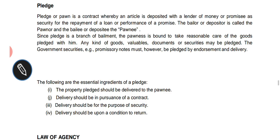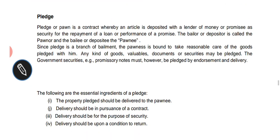The exceptions where a non-owner can make a valid pledge are: first, pledge by a mercantile agent; second, pledge by a person in possession under a voidable contract; third, pledge by a person with a limited interest; fourth, pledge by a seller in possession after sale; and fifth, pledge by a buyer in possession after sale but before becoming the owner of the goods. We will discuss each one by one.